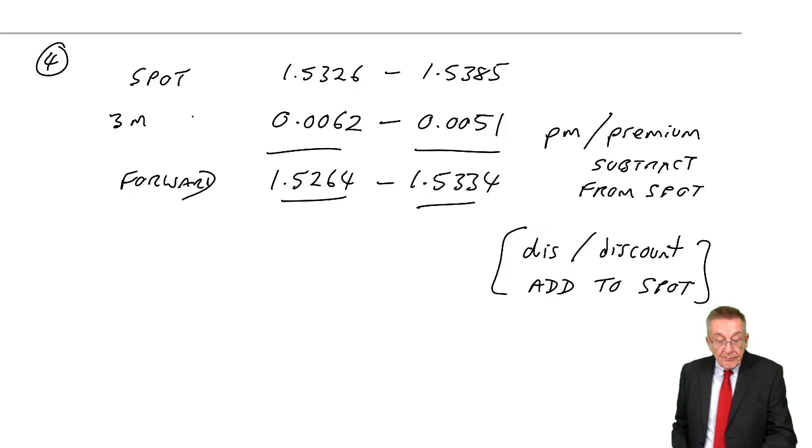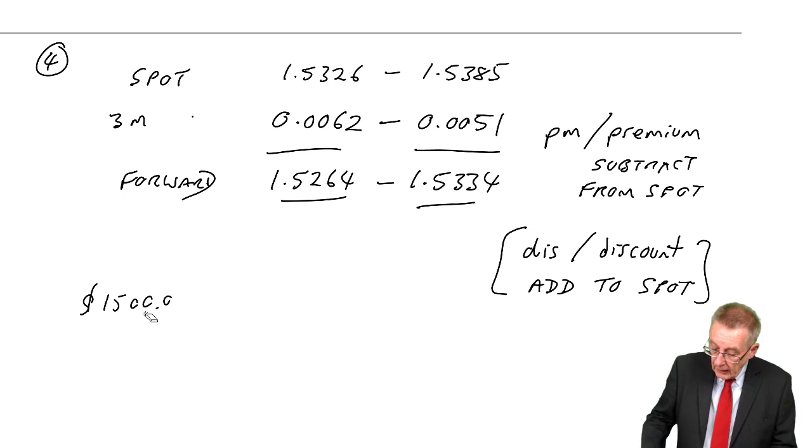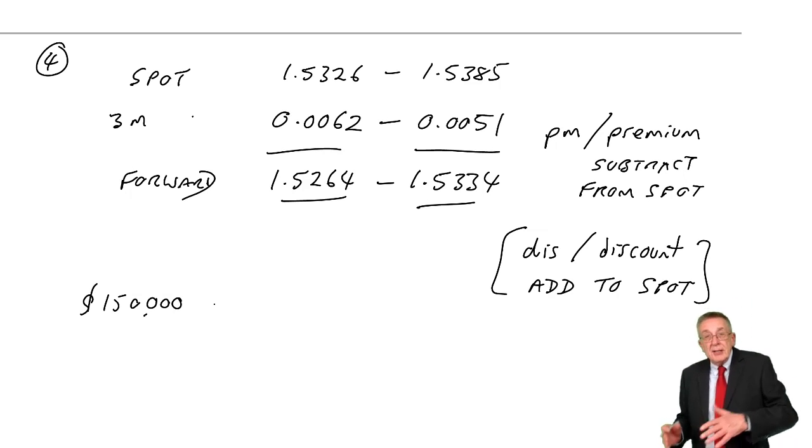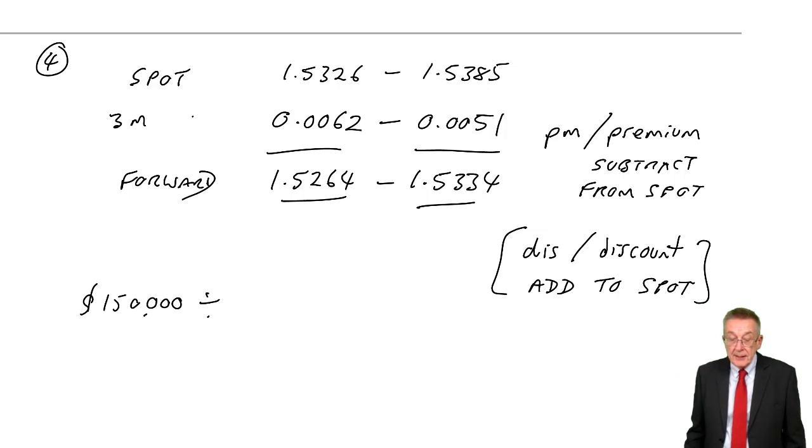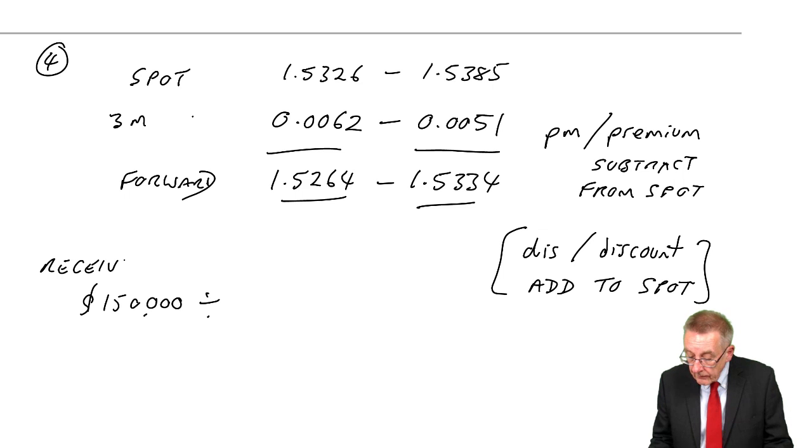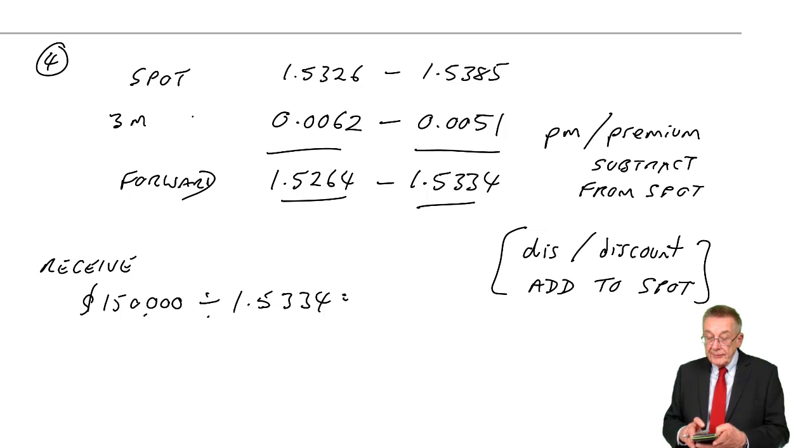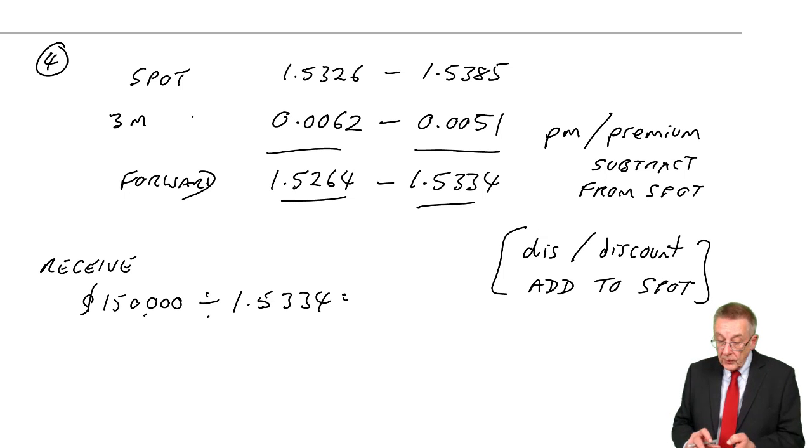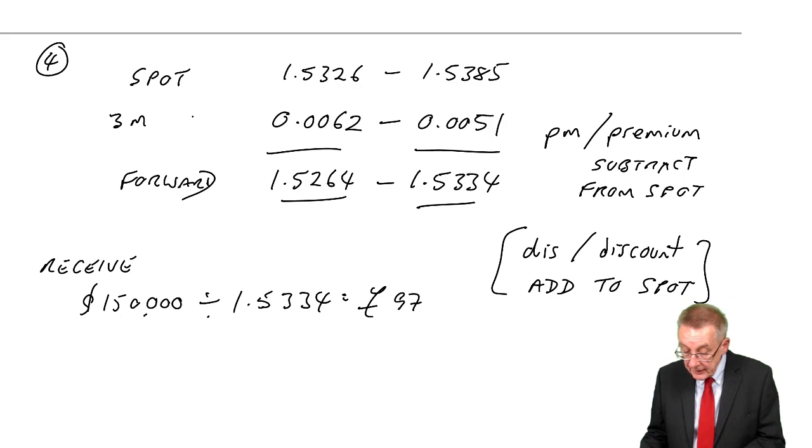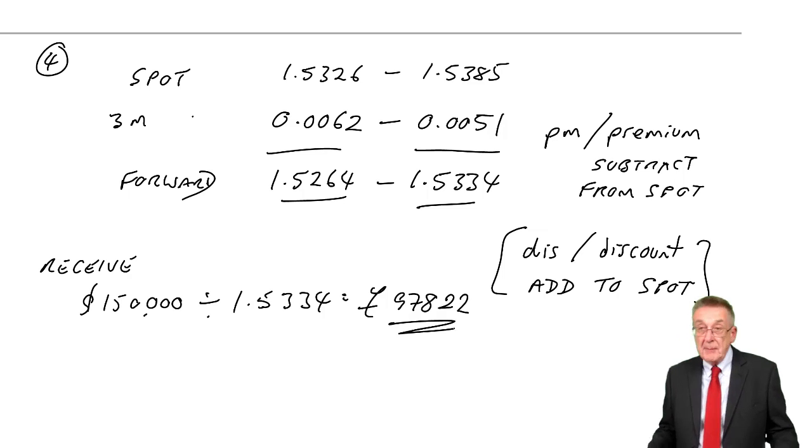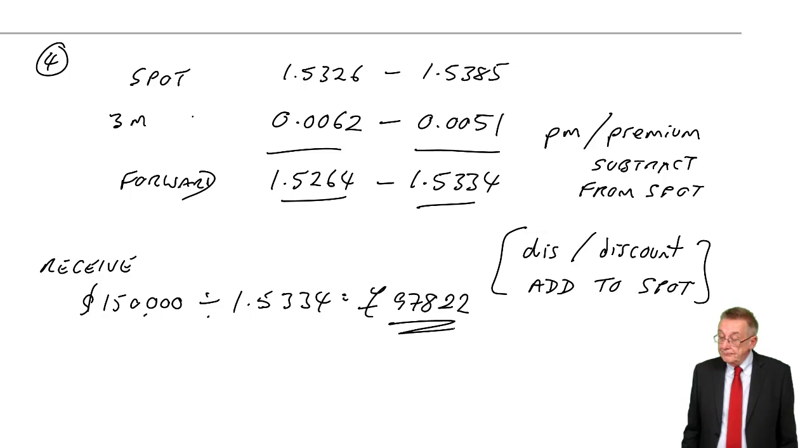However, once we've got the forward rate, it's easy. We're going to receive 150,000 dollars. Here, there are 1.5385 to the pound, so we'll divide by the exchange rate. And here, because we're receiving money, we're going to be selling dollars to convert to pounds. We'll convert at the higher rate, 5334. So 150,000 divided by 1.5334, it would convert to 97,822, to the nearest, do these to the nearest whole number when it's foreign exchange.